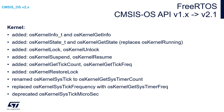Going further with the differences between CMSIS-OS v1 and v2 and talking about the kernel functions, there are a lot of new functions added which were not implemented in v1, like kernel info, kernel state, kernel log, kernel suspend, kernel get tick count, or kernel restore log. There were also a few functions renamed, and one function — OS kernel initialize — has been removed.